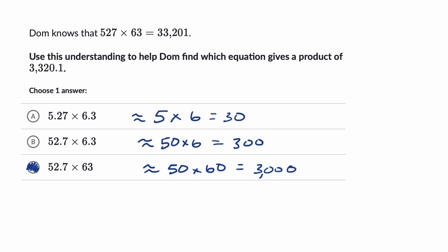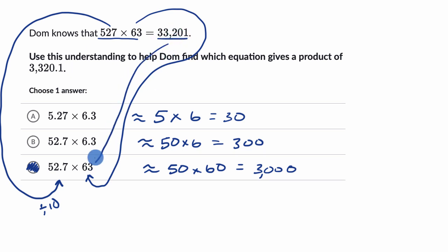Now you can also think about it this way. To go from 527 to 52.7, you are dividing by 10. To go from 63 to 63, you aren't doing anything. So if you're taking this product and you're getting 33,201 and you want to go to this product, one of these needs to get divided by 10 or the product has to get divided by 10. If you took 33,201 and divide by 10, you are going to move the decimal one to the left. You're going to get 3,320.1.